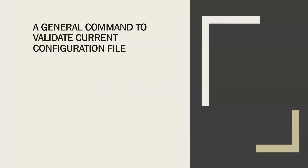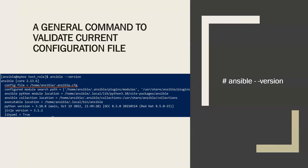The next important question is how one can identify the configuration file from which settings are currently effective in your run. The ansible --version command is pretty helpful in providing this information. When you execute that command, it gives you the path of the configuration file which is currently being picked, along with some other details like the Python version and the local Ansible binary path.